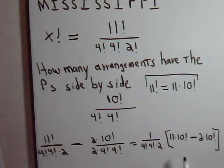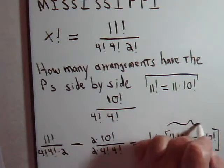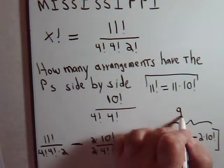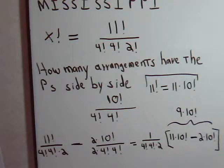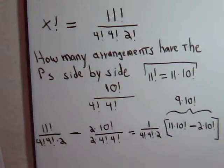And it looks like this expression here is going to be 11 minus 2 is 9, so this equals 9 times 10 factorial.